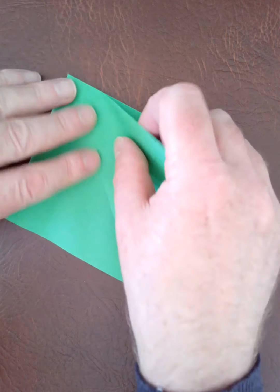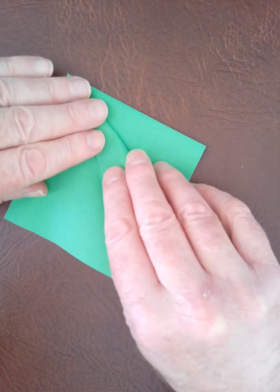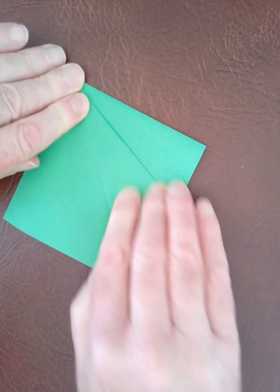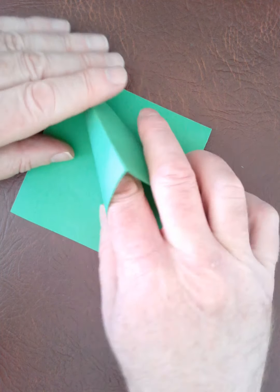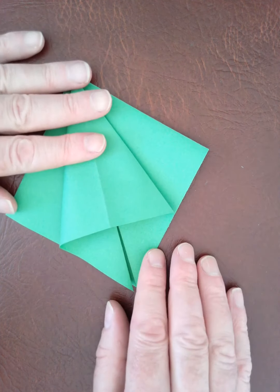So the first thing we're going to do is take one of those flaps and fold it into the middle and then unfold it but then squash it down like this.